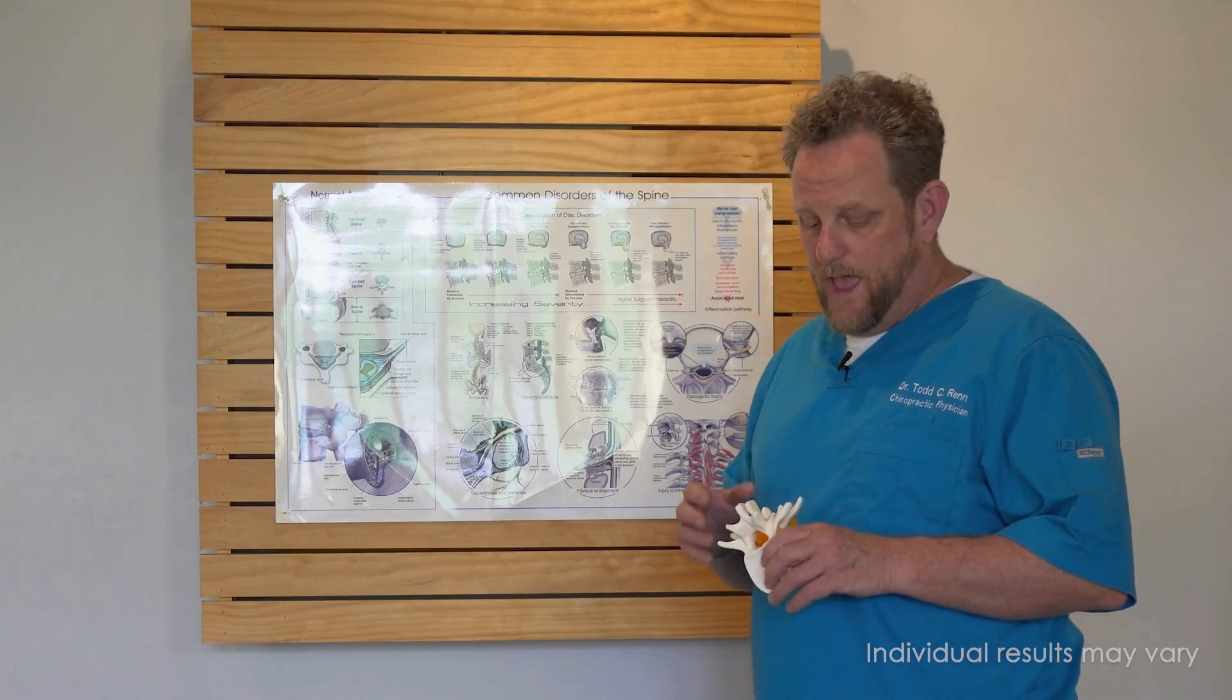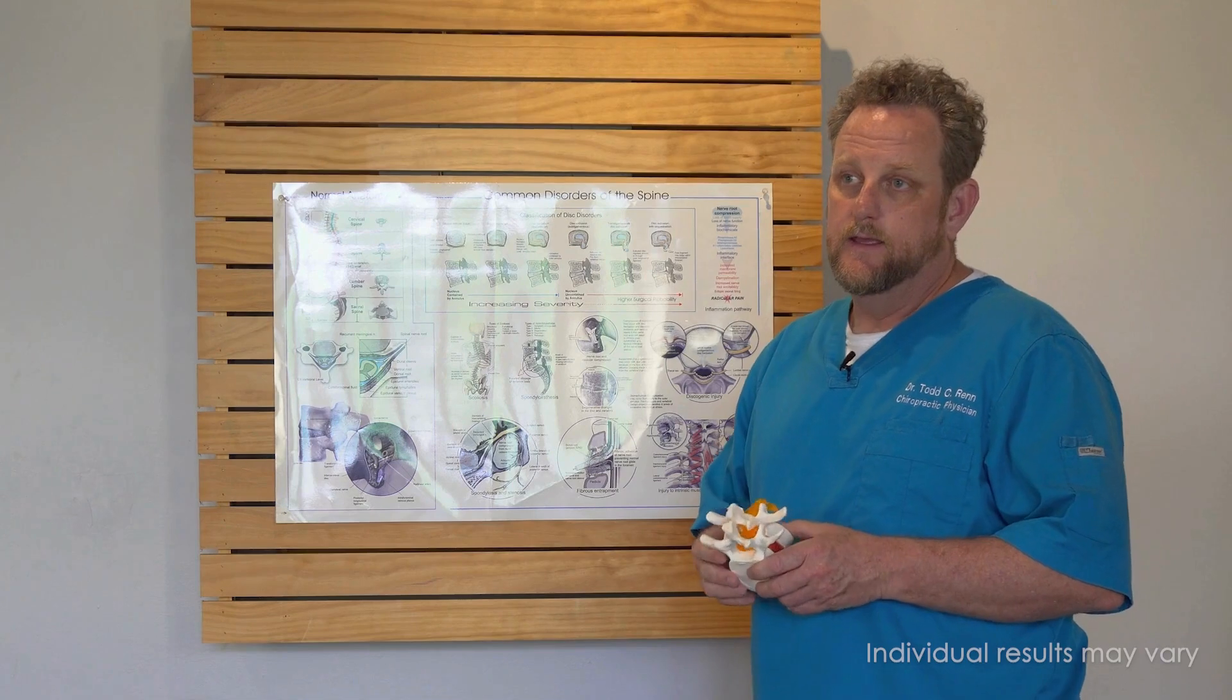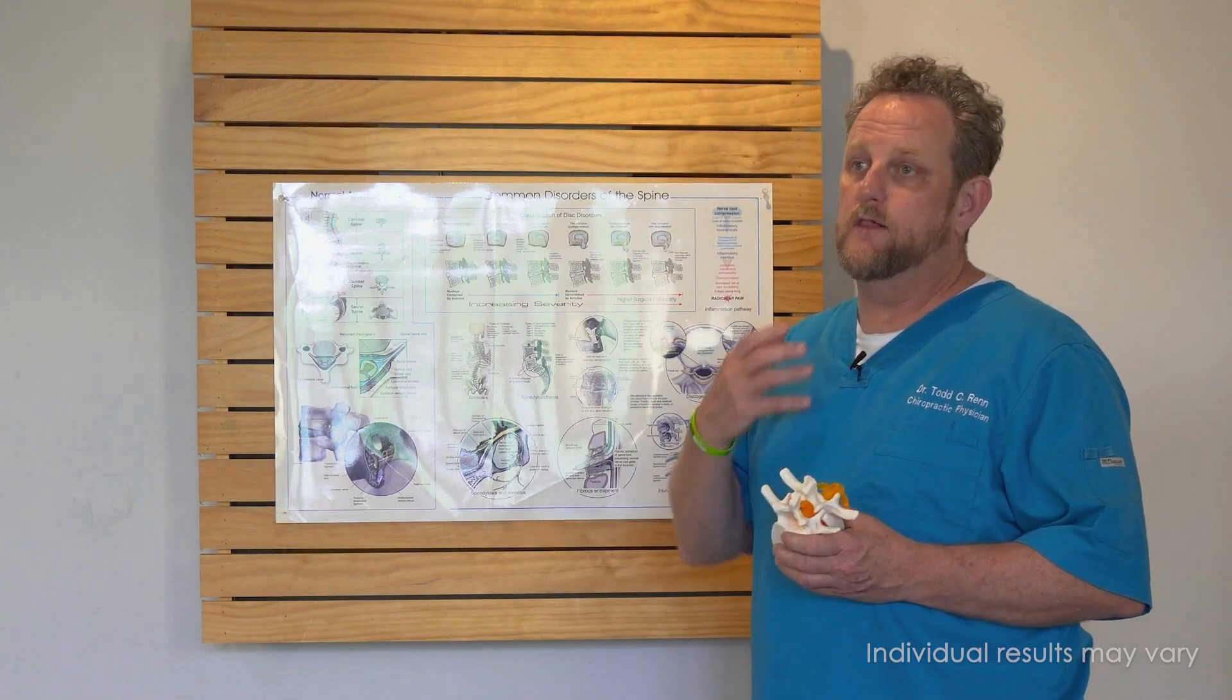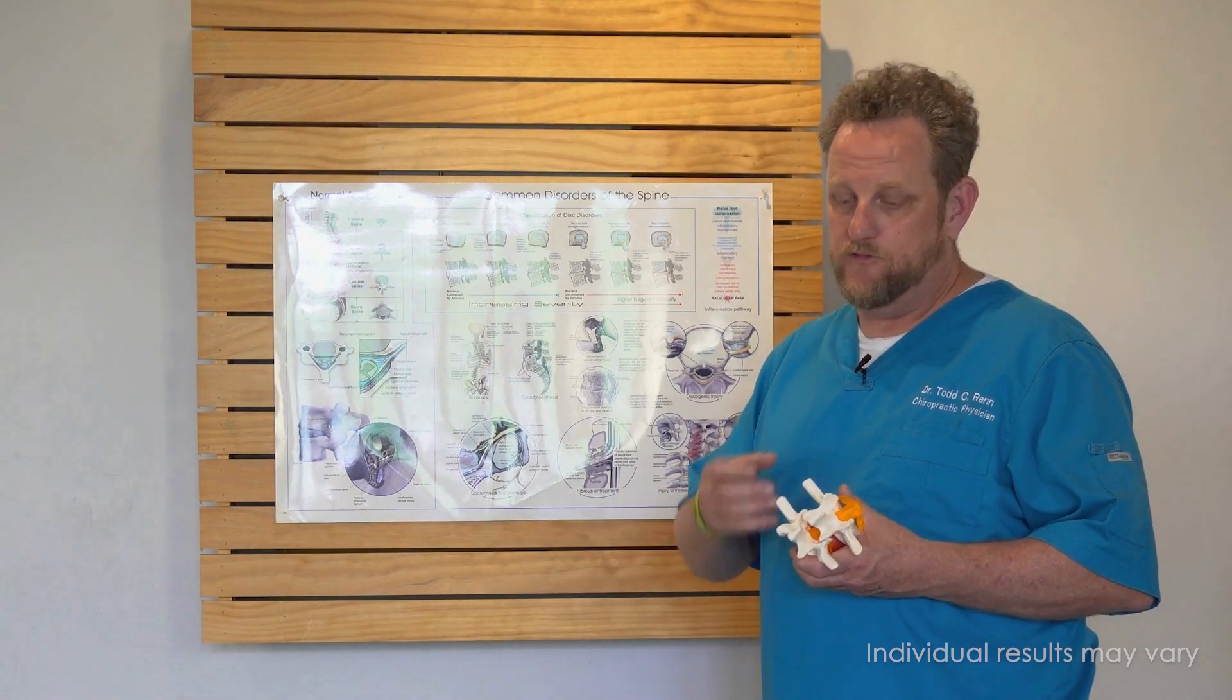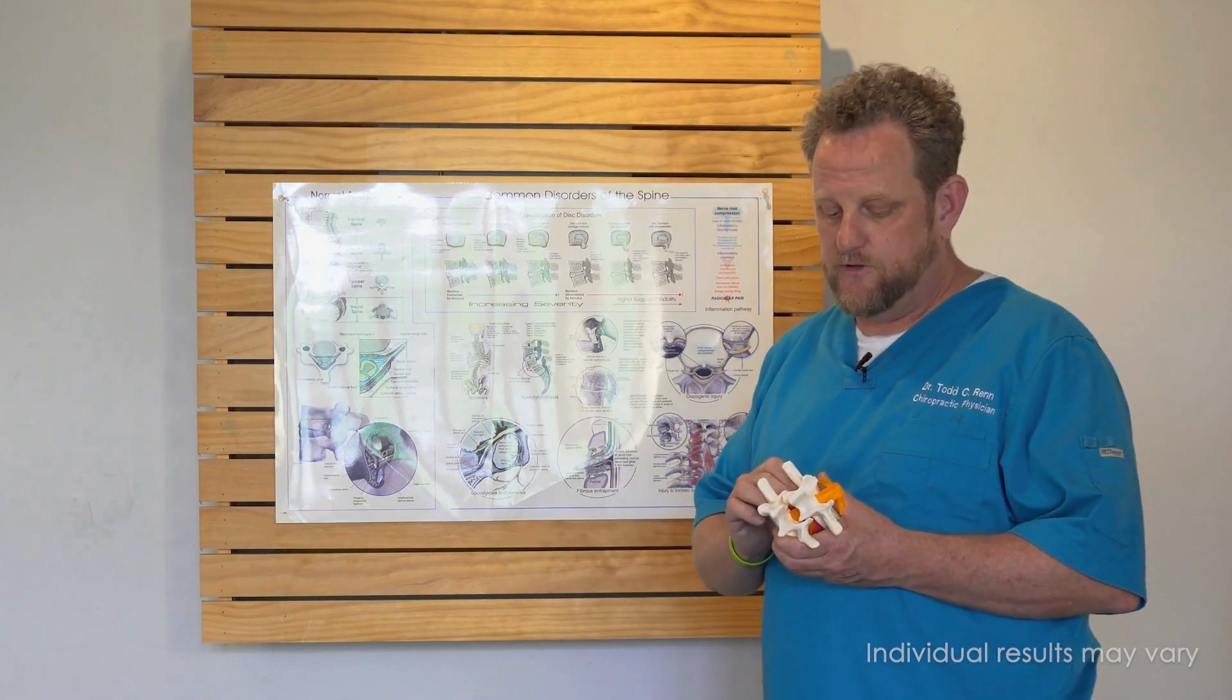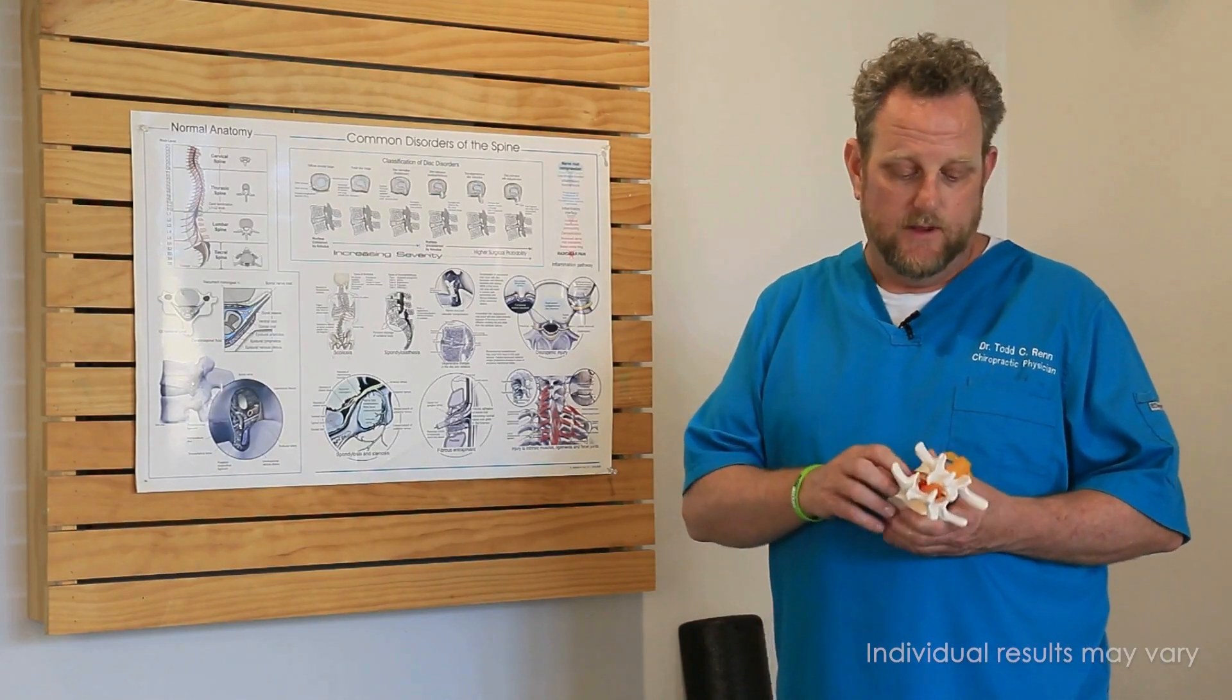The treatment for sciatica is basically getting the pressure off the nerve, and there are multiple ways to do this. First, you get pain, swelling, and inflammation because the nerve is irritated. The material that comes out is very caustic to the nerve, plus you can get irritation of surrounding structures.